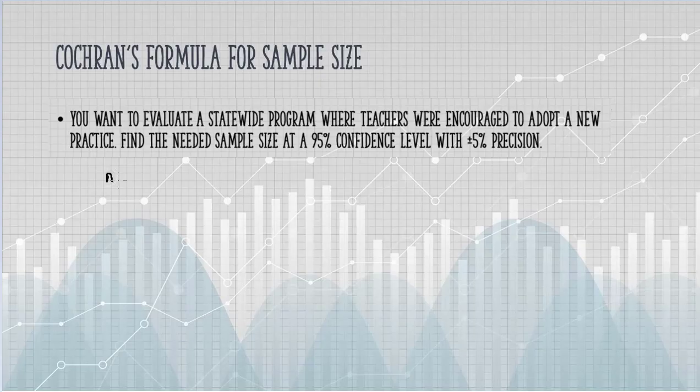Cochran's formula works best for large populations, and as we have a statewide population of teachers, we're going to assume the population is large.